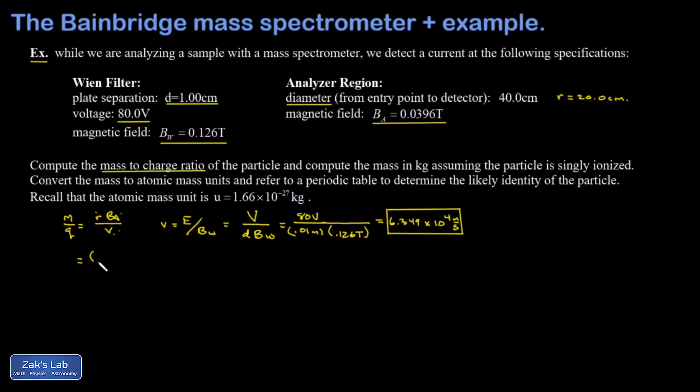I have a radius of curvature of 20 centimeters or 0.2 meters, a magnetic field strength of 0.0396 Tesla in the analyzer region, and a particle speed of 6.349 times 10 to the fourth meters per second. This leaves me with a mass-to-charge ratio of 1.247 times 10 to the negative 7. And that would be measured in kilograms per coulomb.